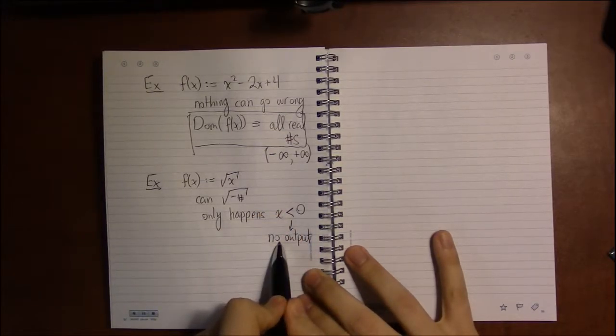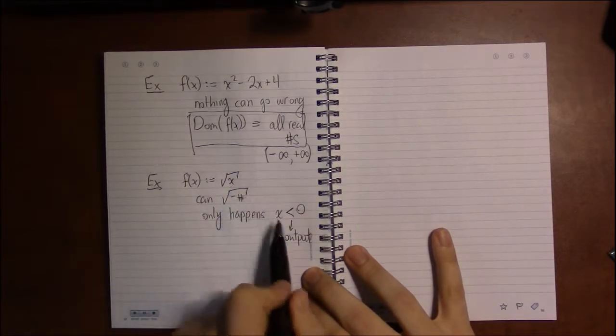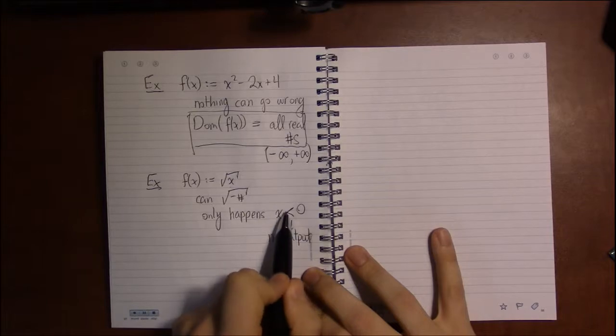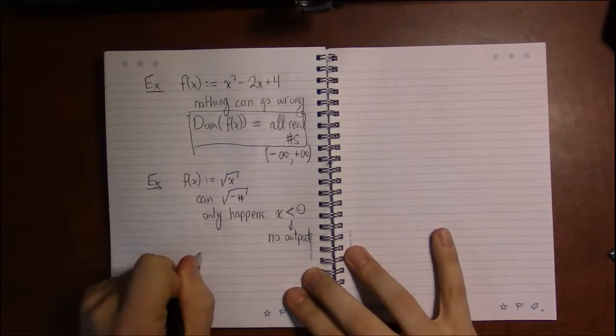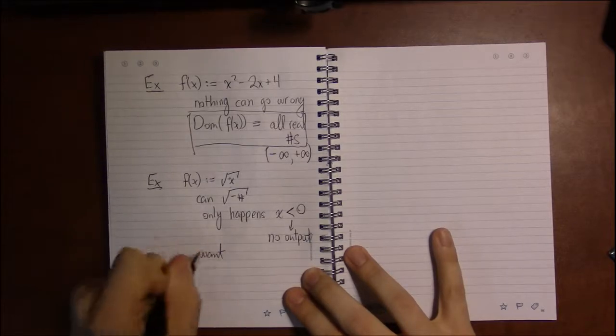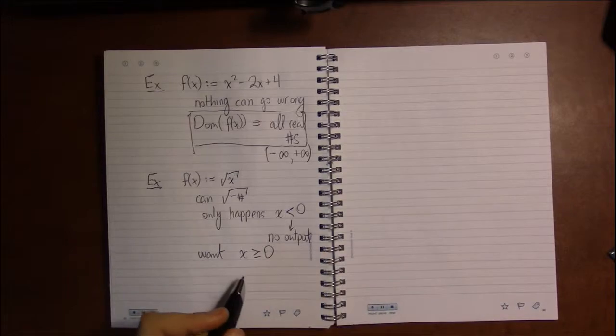I don't want these values. I only want the x values that do give me an output. So if x is not less than zero, that means we want x to be greater than or equal to zero.